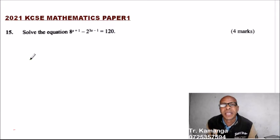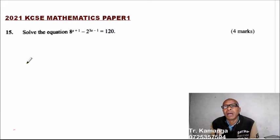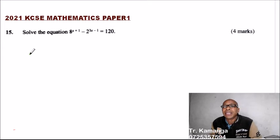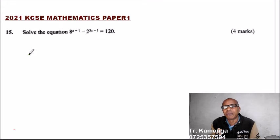Question number 15: solve the equation 8 to the power x+1 minus 2 to the power 3x-1 equals 120. Here you are going to apply the knowledge you learned in the topic of indices.